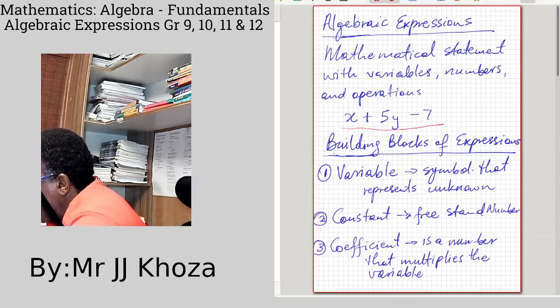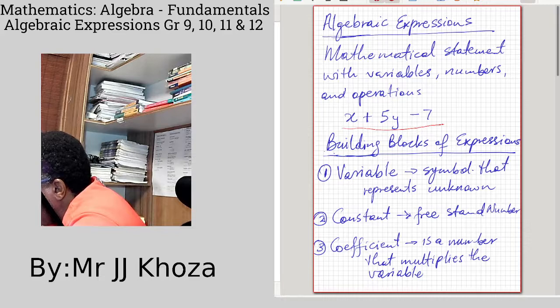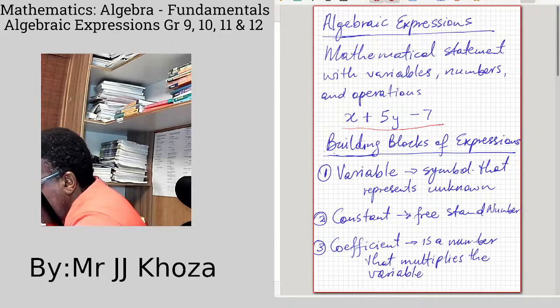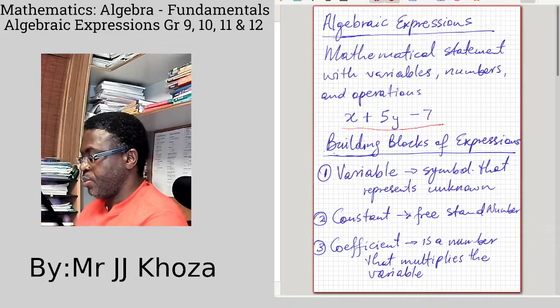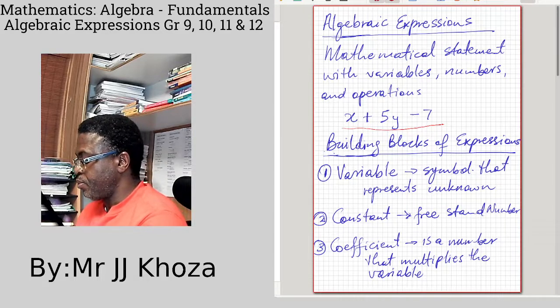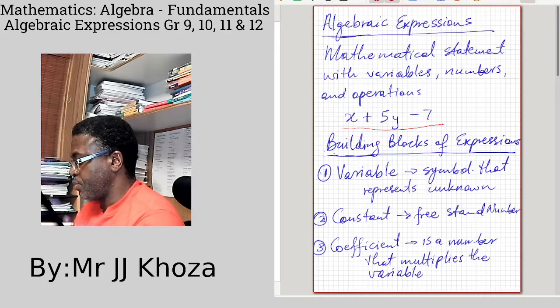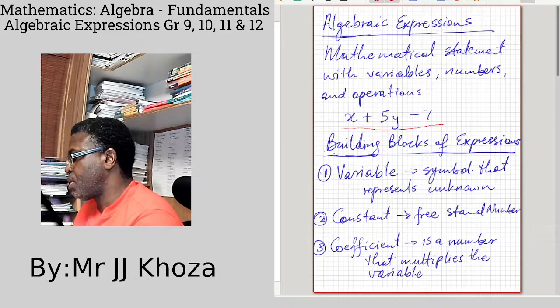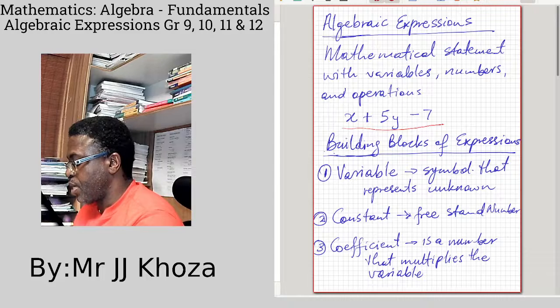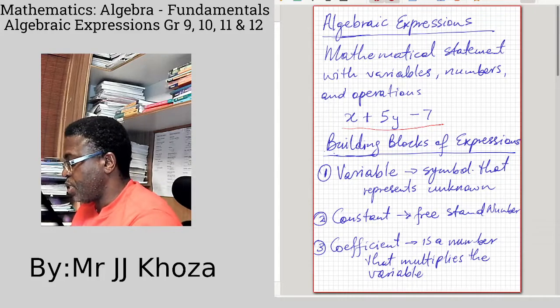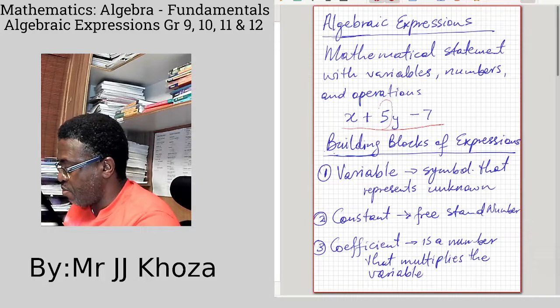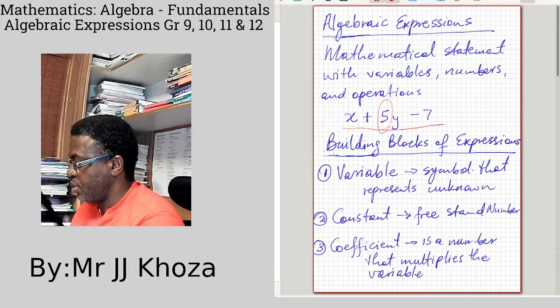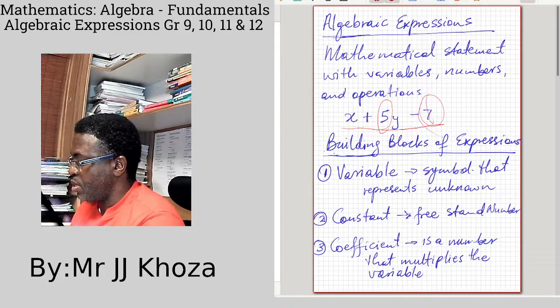What are the building blocks of an algebraic expression? One is a variable, a symbol that represents the unknown quantity. A constant is just a freestanding number, just like you see 7 above. And a coefficient is a number that multiplies the variable, just like you see 5 here. This 5 is a coefficient and this 7 is a constant.